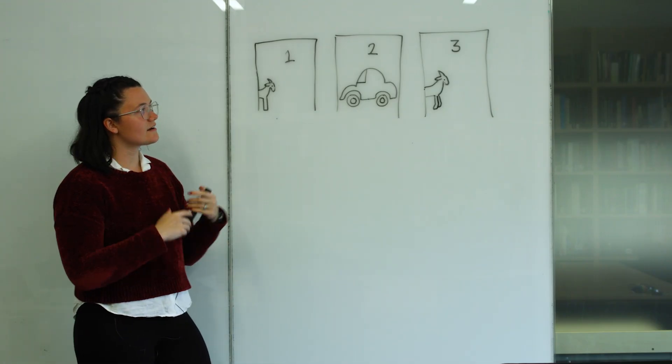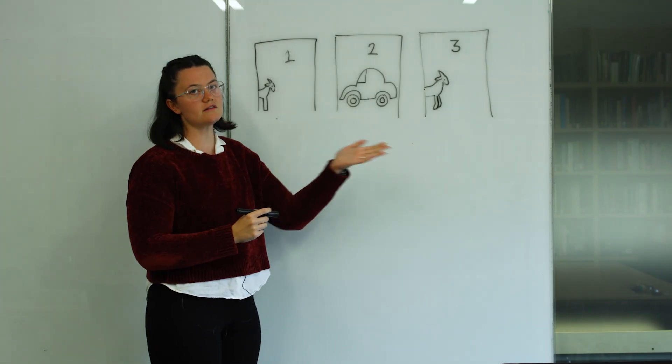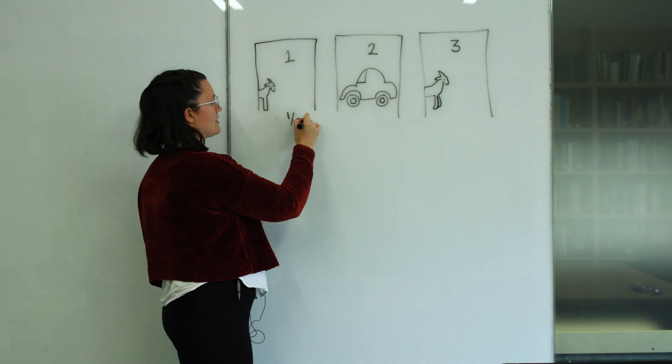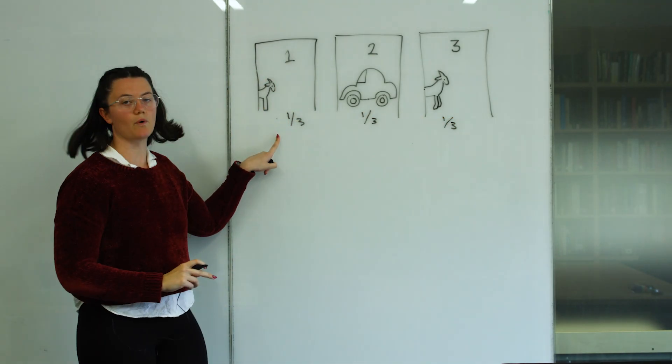So one of them has a car behind and two of them have these goats or goat look-alike creatures anyway. And essentially you pick a door. Let's say we pick door number one. To start with, there's a third chance that there's a car behind the door that you pick.